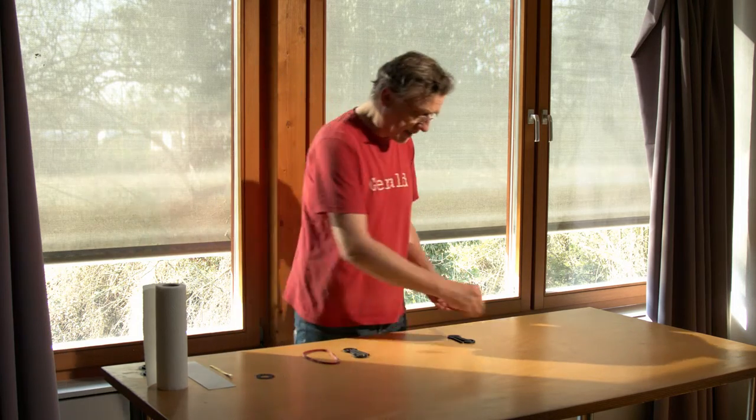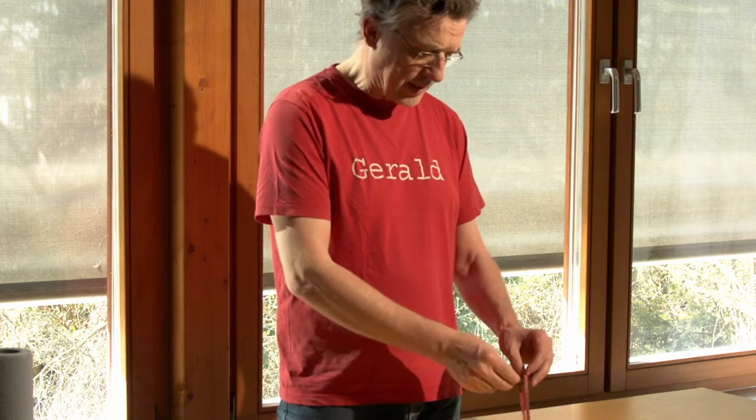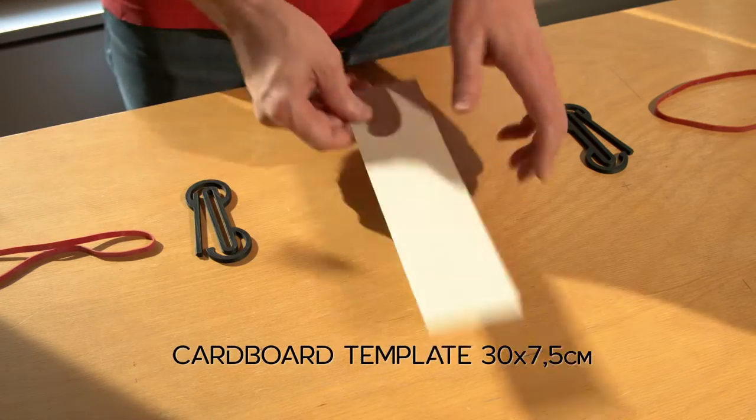For folding the actual filter of the mask, we are going to need a cardboard positioning help of 30 x 7.5 cm.